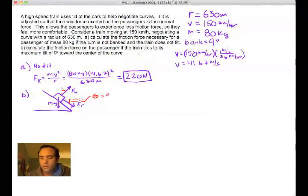So for part B, things get a little more complicated. So now we have the train being banked at some angle. And that angle is 9 degrees. So the first thing you're going to want to do is draw a free body diagram and look at the components of the forces that are at play here.